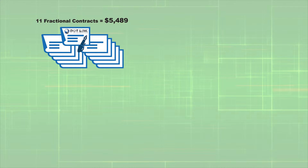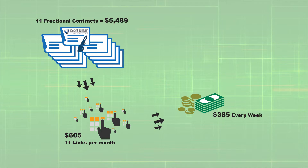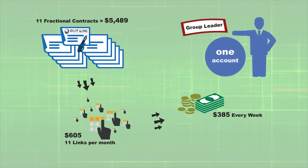If you choose to begin with 11 fractional contracts, your total investment will be $5,489. You are obligated to maintain a purchase of 11 daily link chains for a total monthly cost of $605. Click and complete the link chains every day for seven consecutive days and you will receive $385 per week. This qualifies the promoter as a group leader. To qualify as a group leader, all 11 contracts need to be the same — either 11 full contracts or 11 fractional contracts, but not a mixture.